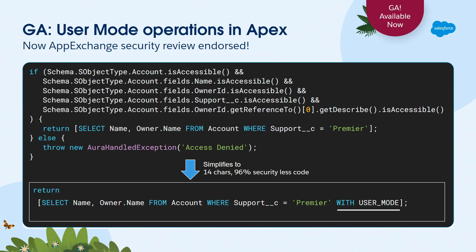User mode is now generally available and fully supported for the AppExchange security review. The checkmark scanner has not been updated yet, so if it flags you on this, you're okay - put it in your false positive document. They've promised it will be updated in the first half of next year at the absolute latest, but it is fully approved for AppExchange use. You are ready to go.